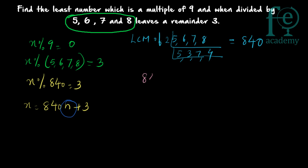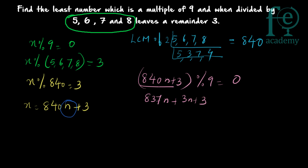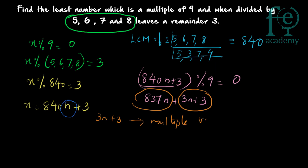We know 840n + 3 is a multiple of 9. We split 840n to find a multiple of 9 nearest to 840: 837 is a multiple of 9, so 840n = 837n + 3n. Then 840n + 3 = 837n + 3n + 3. Since 837n is already a multiple of 9, the term 3n + 3 must also be a multiple of 9 for the whole expression to be a multiple of 9.